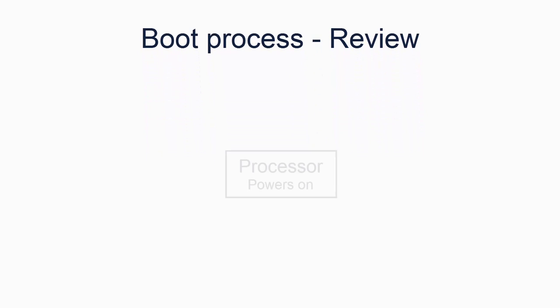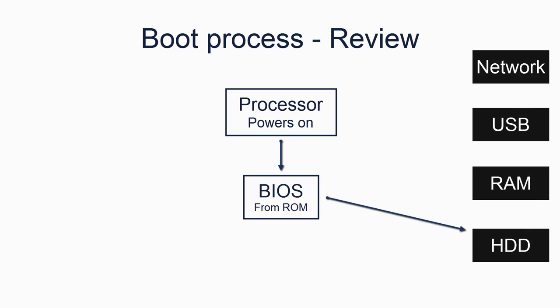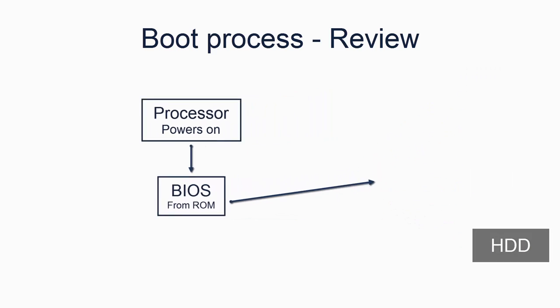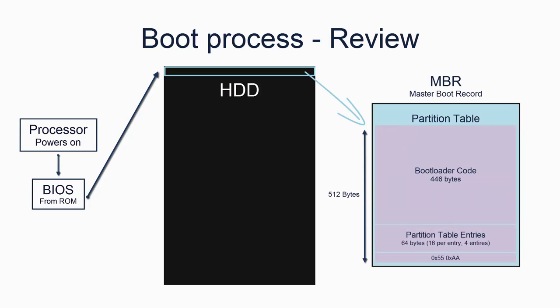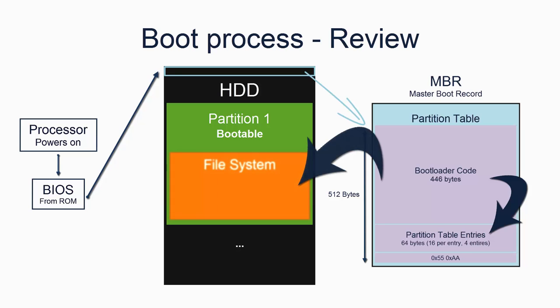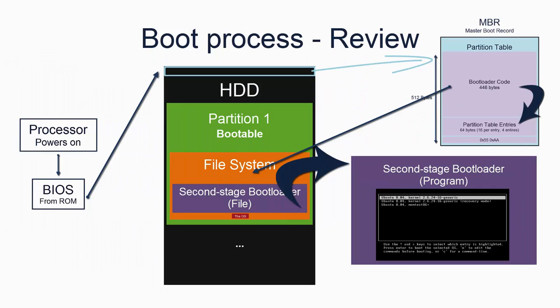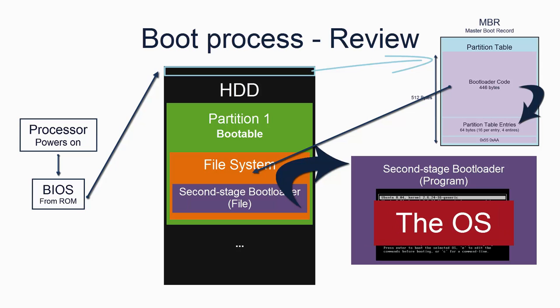Let's review the boot sequence. The processor switches on and then loads the BIOS from the BIOS ROM. The BIOS scans the system, finds the first stage bootloader on a device, loads it and starts executing it. The first stage bootloader reads the device's partition system, finds the bootable partition, reads the partition's file system, finds the second stage bootloader, and then loads and executes it. The second stage bootloader presents the user with some options, and then loads and executes the selected operating system.